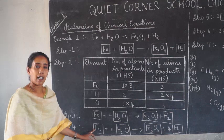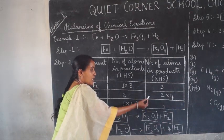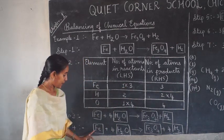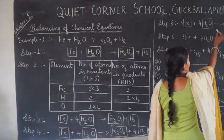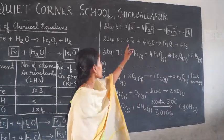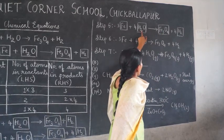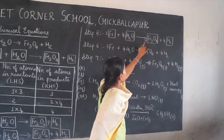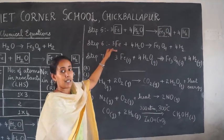Finally, iron is not balanced — only one atom on the left, three on the right. Multiply the left side by three: 3Fe + 4H₂O → Fe₃O₄ + 4H₂. Iron: three on both sides. Hydrogen: 4×2=8 on both sides. Oxygen: 4×1=4 on both sides. The equation is now balanced.